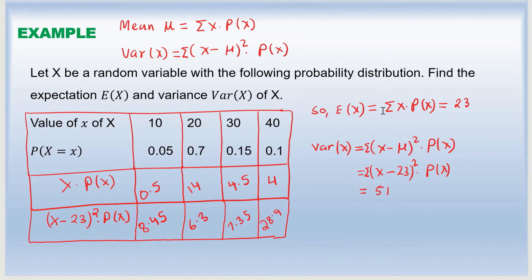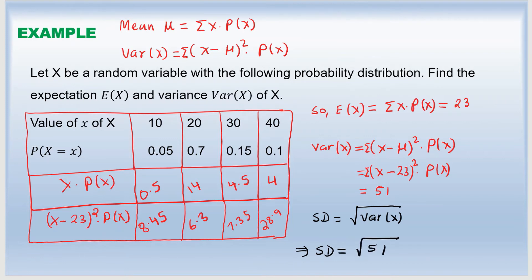We found the expected value and the variance. Although this problem did not ask for the standard deviation, it would be the square root of the variance — the square root of 51. Using a calculator, the square root of 51 is approximately 7.1414. Once we know the variance, taking the square root gives the standard deviation.